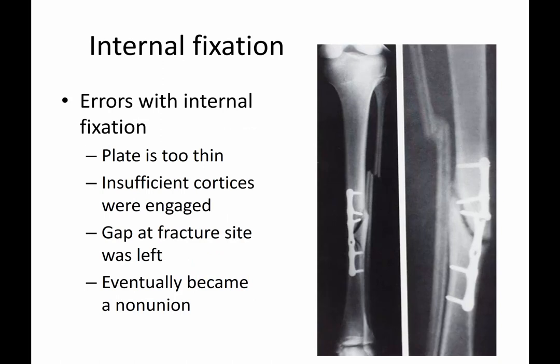Occasionally, errors with internal fixation can lead to problems with the bone not healing, or the plate breaking — you can see the plate is actually broken here, those are the two ends of the plate. Sometimes the plate may be too thin or too thick, insufficient cortices were engaged, or there's too much of a gap at the fracture site — eventually it becomes a nonunion. This is highly technique dependent.